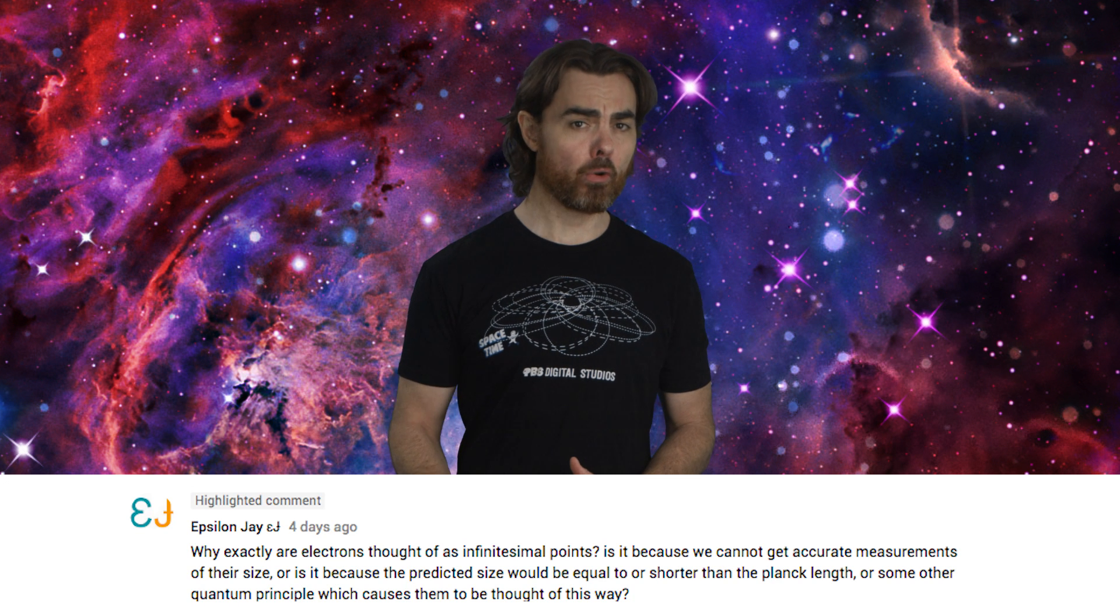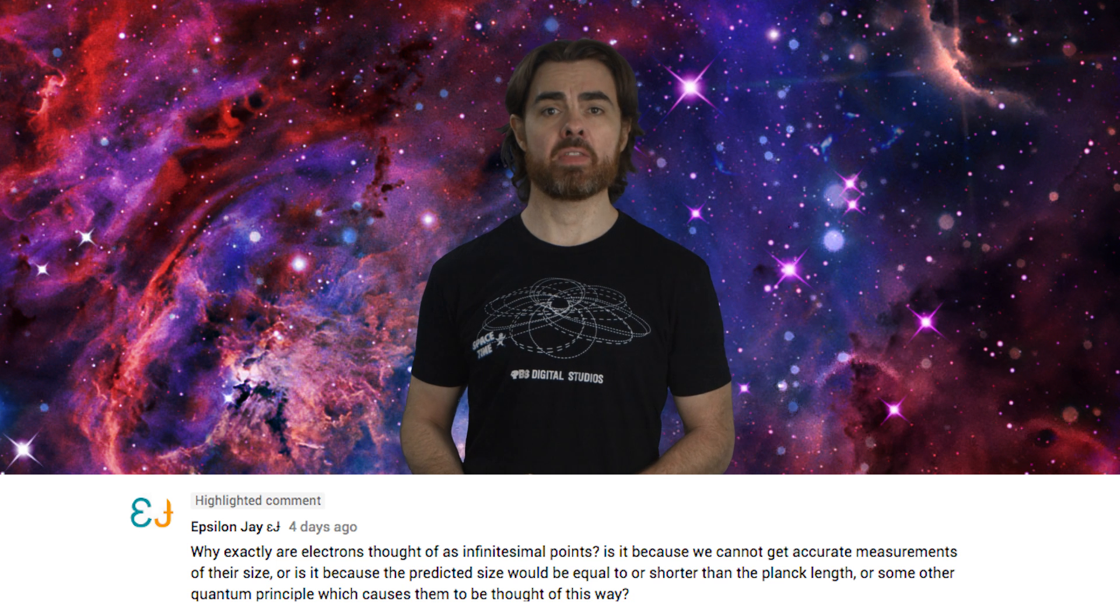Epsilon J asks why electrons are thought of as infinitesimal points. Well, the answer is essentially that, as far as quantum mechanics is concerned, size is a property of composite particles, things that are made up of multiple elementary particles. It's the size of that bundle of elementary particles. But elementary particles themselves don't have size in this sense. All they have is their quantum wave function, which tells the probability of the particle's location, momentum, spin, direction, et cetera. Now, we can think of a quantum wave function as having a size because it can be spread out over space. But that spatial spread really just tells us the probability of finding the electron, say, here or here or here. If we know with 100% certainty the position of an electron, then the size of its quantum wave function becomes zero. In practice, the Heisenberg uncertainty principle makes this impossible. But really, in principle, there's no minimum precision with which we can know the electron's location. So there's no minimum size.